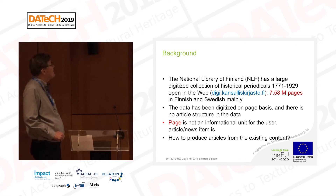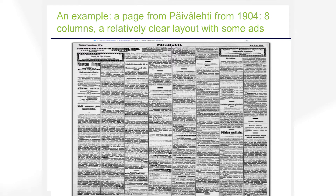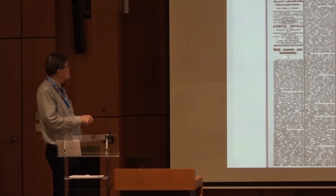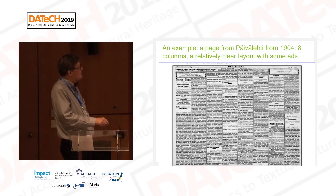Here's a page of Päivälehti, one of the leading newspapers from over 100 years ago, printed in Helsinki in 1904 — eight columns, a relatively clear printout with pretty tight borders. All newspapers of this time look more or less the same: news items, a few advertisements, a long article describing something, then a section of small news items of one paragraph each, and so on — very different kinds of content.